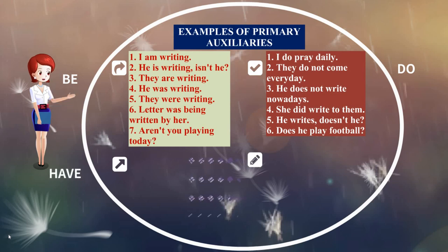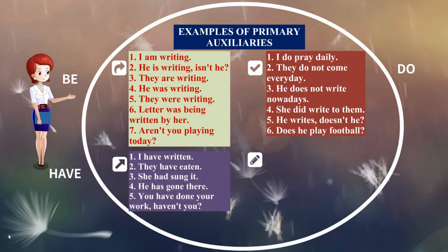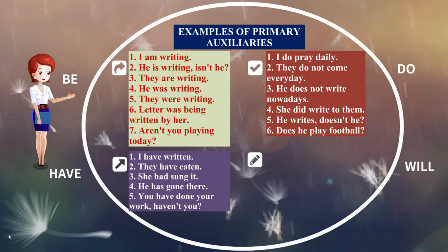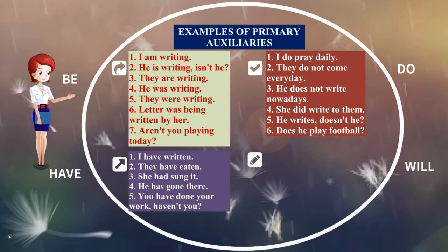Next, the 'have' forms. 'I have written' — 'have' is used with the past participle. 'They have eaten.' 'She had sung it.' 'He has gone there.' 'You have done your work, haven't you?' — here 'haven't' forms a question tag. You can also ask a question: 'Haven't you done your work?' These examples show 'have' used to form perfect tenses and interrogative sentences.